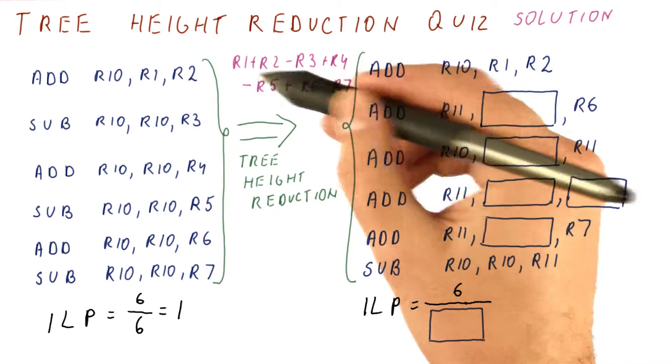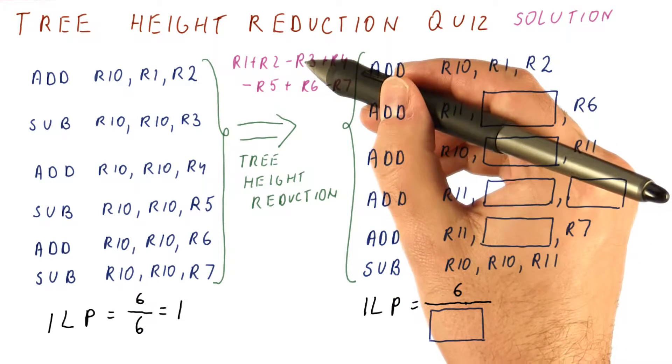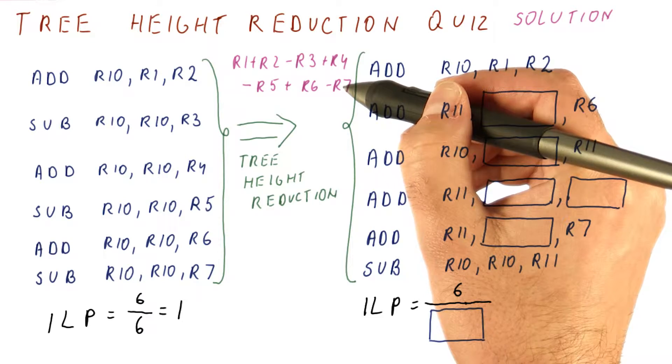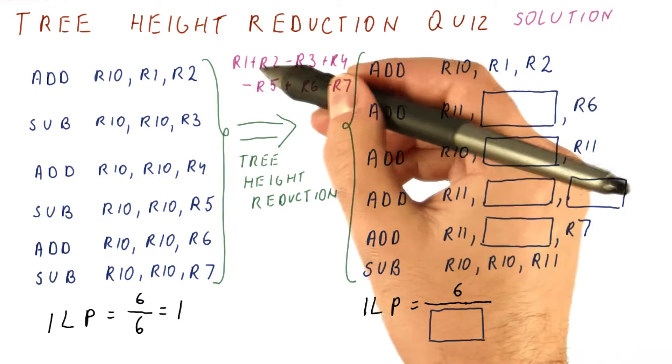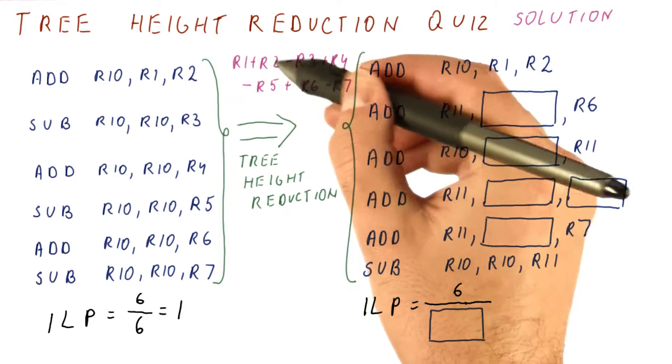So here, what we need to do is we need to add up four numbers and then subtract three numbers from that. So first, we will add up the four numbers. We already added up R1 and R2.